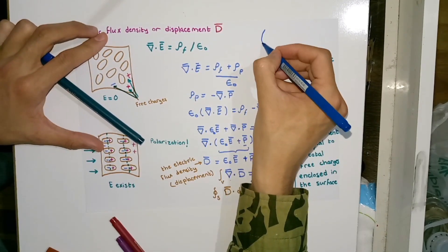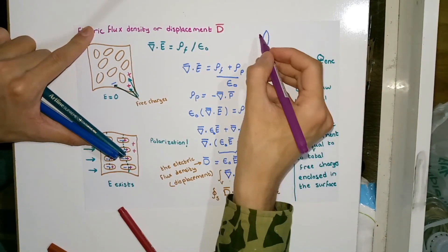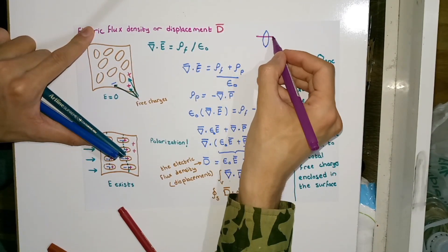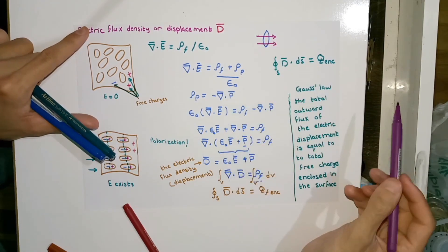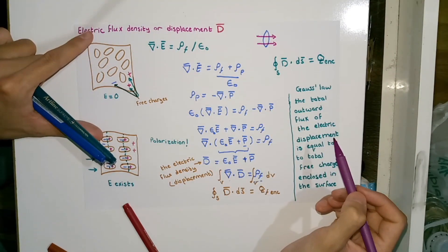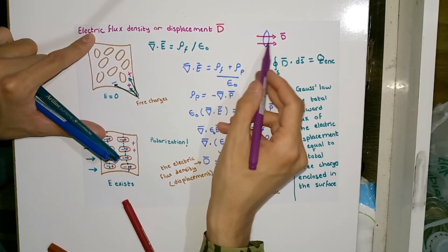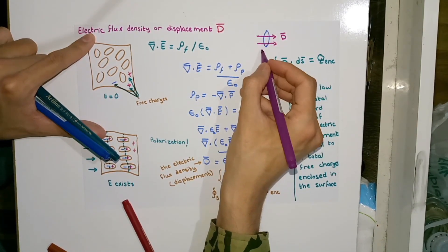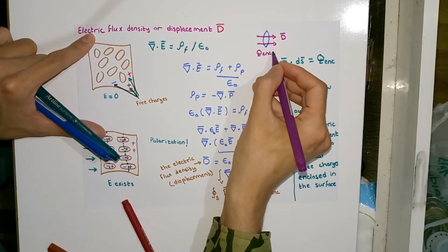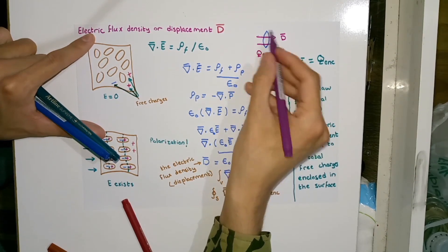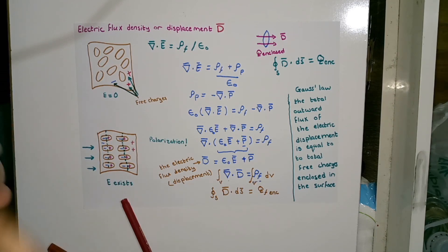In other words, let's assume we have a closed surface like this, with an electric field penetrating it. The total outward flux of the electric displacement through this surface is equal to the total free charges enclosed in that closed surface — equal to Q enclosed.